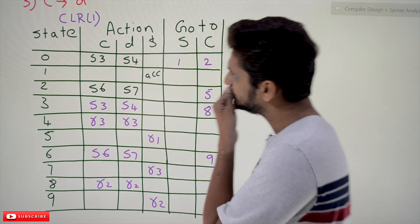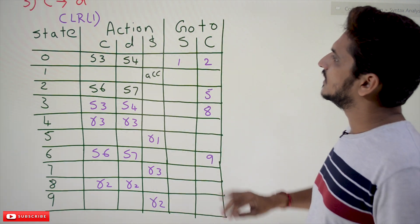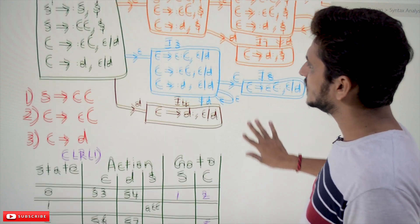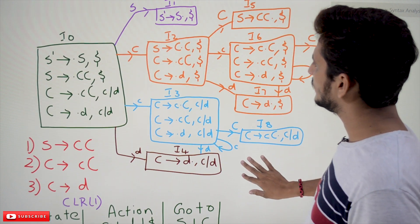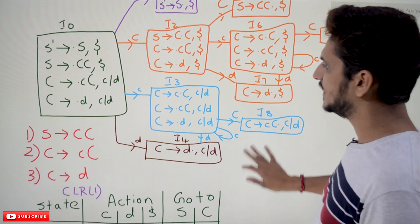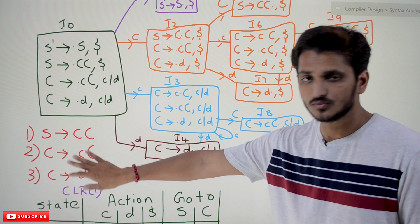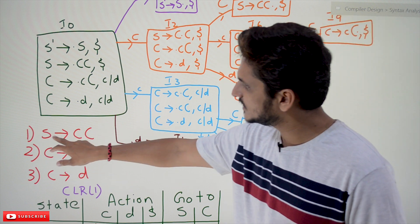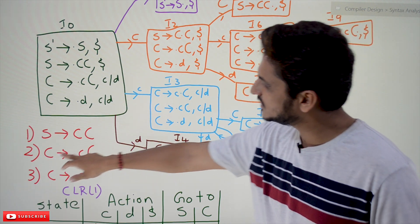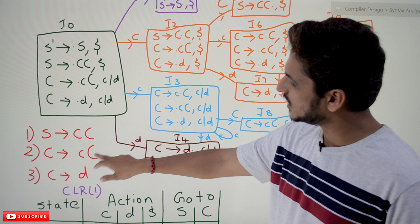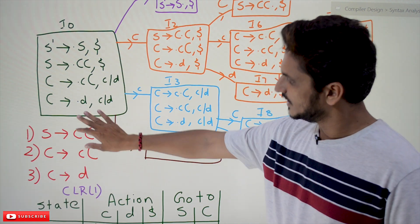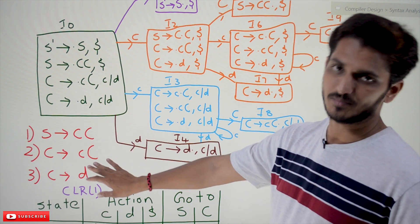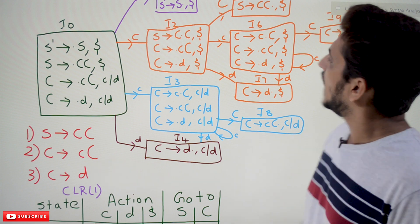Before going into the table construction, let's refresh our example for a minute. These are the productions; for each production we have given a number. The first production is S tends to CC, C tends to small c capital C, C tends to d. These are the list of productions and each production is assigned a number.